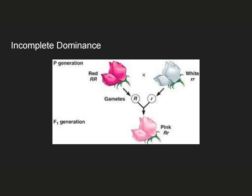In reality, there are more possibilities. For example, there is incomplete dominance. Here, you might see a situation where we have a big R, big R parent with red flowers, a little R, little R parent with white flowers, but their heterozygous offspring does not have the exact same phenotype as either one of the parents. Instead, the phenotype is somewhere in the middle — in this case, pink. The phenotype of the heterozygous individual doesn't completely match the phenotype of either one of the parents.